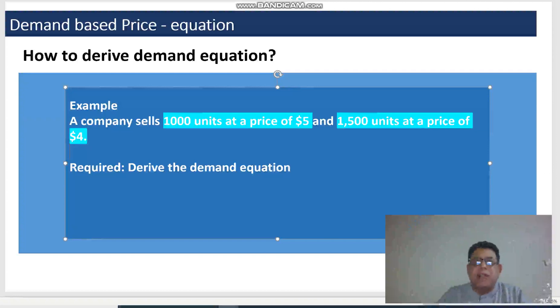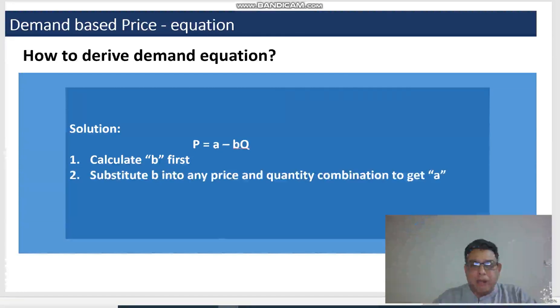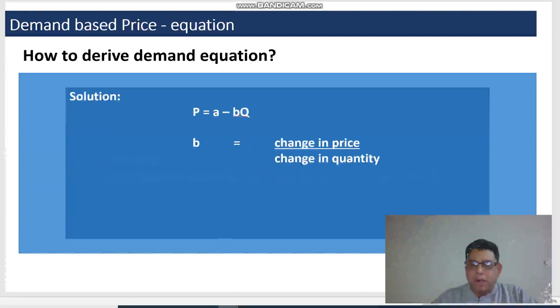So let's calculate the demand equation of this product. First of all, we need to remember that economists have derived this equation as P equals to A minus BQ. First of all, we will calculate B value, which is change in price divided by the change in quantity.